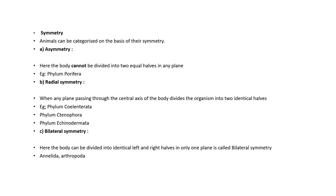First, we look at animal symmetry. Asymmetry is where the body cannot be divided into two equal halves in any plane. In a plane, two equal halves represent symmetry.